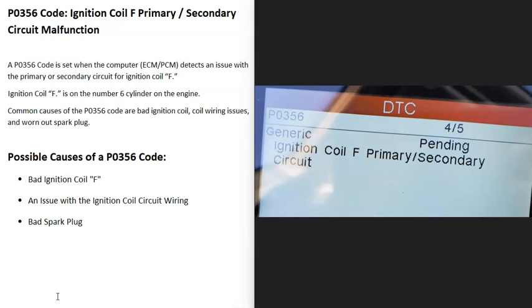Today I'm talking about a P0356 code, what it is, and how to fix it. A P0356 code is an ignition coil F primary/secondary circuit malfunction.